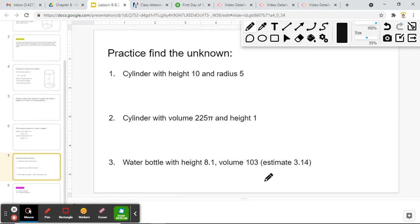Last one here. A water bottle with height 8.1 and volume 103, and we're going to estimate 3.14 for π. So our volume is 103. Our radius we don't know, so I'll do r² times π, which is 3.14, times the height, which is 8.1.